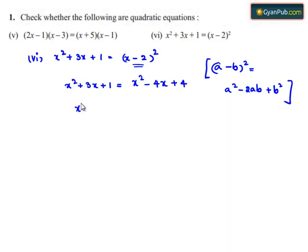On left hand side we have x square plus 3x plus 1 and transposing the right hand side terms to the left hand side we get minus x square plus 4x minus 4 is equal to 0.